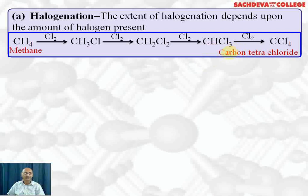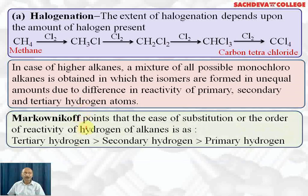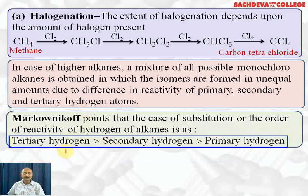In case of higher alkanes, a mixture of all possible monochloroalkanes is obtained, in which isomers are formed in unequal amounts due to difference in reactivity of primary, secondary, and tertiary hydrogen atoms. Markovnikov pointed out that the order of reactivity is: tertiary hydrogen (attached to a carbon bonded to three other carbons) is most reactive, then secondary hydrogen (attached to a carbon bonded to two carbons), then primary hydrogen (attached to a carbon bonded to one or no other carbon).